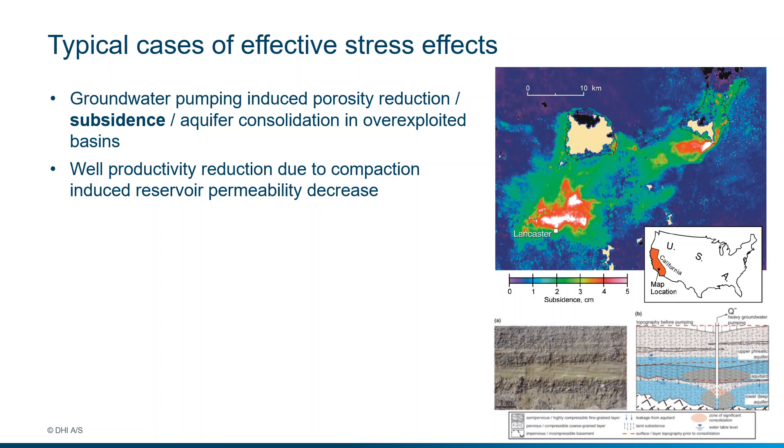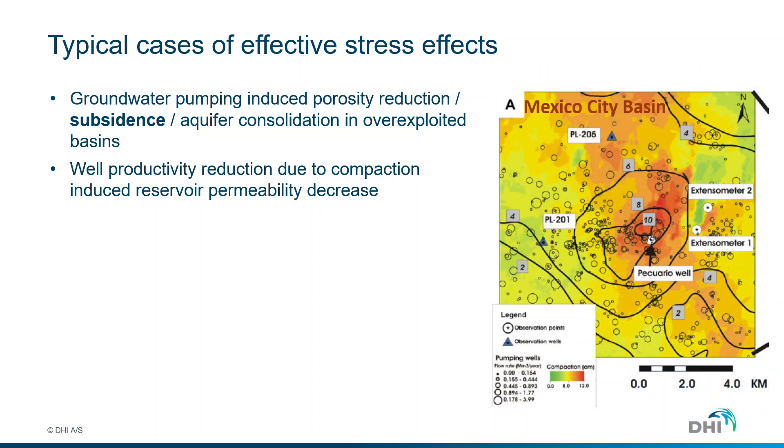Also, this means that the well productivity will be reduced due to effects of compaction, meaning reduction of the permeability in the system. Another typical example is Mexico City Basin, where we have a continuous problem of land subsidence since the last 20 to 25 years on very large scales.